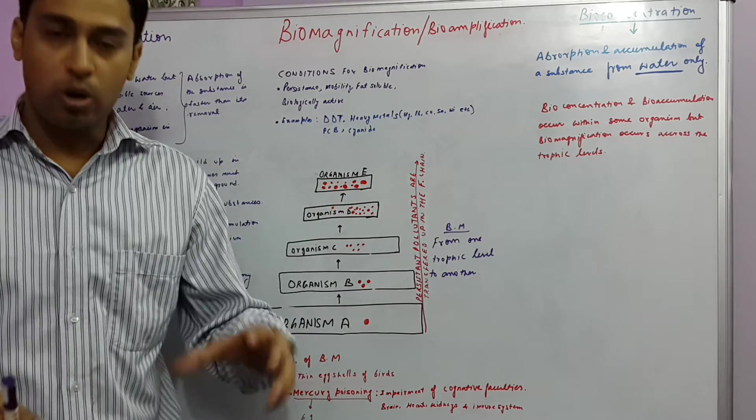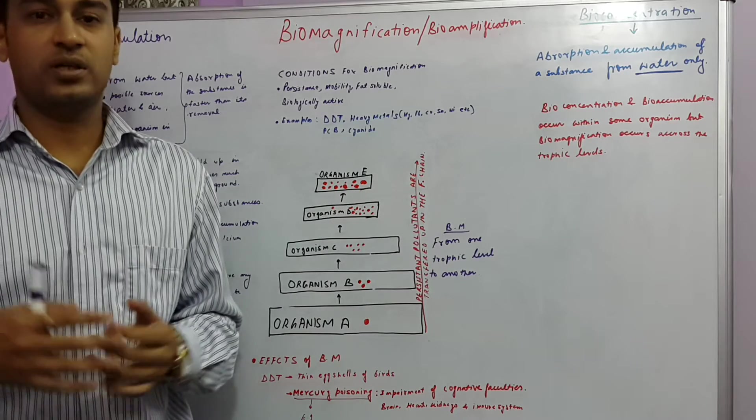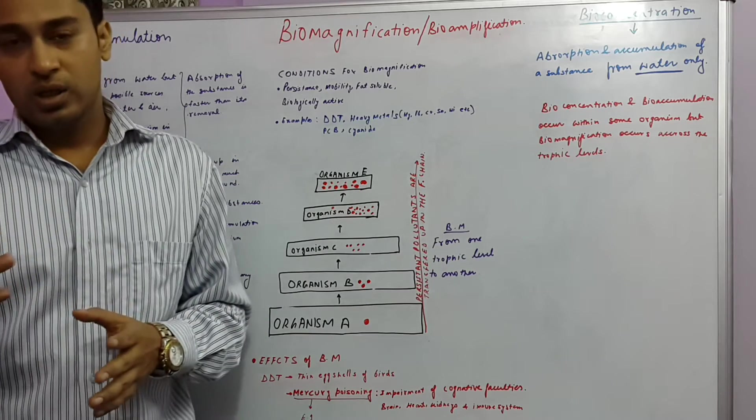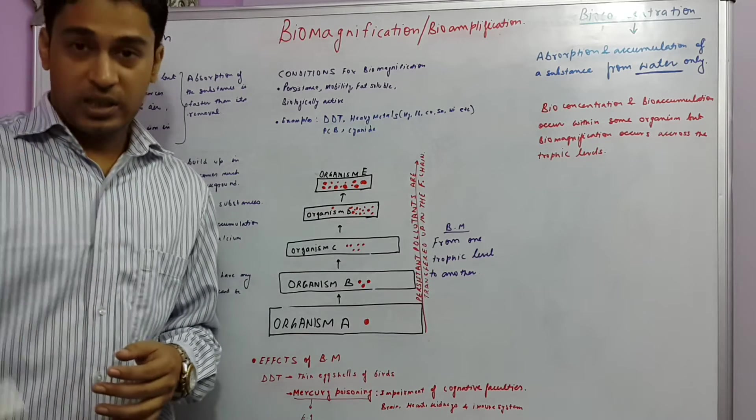For example, mercury poisoning can impair the cognitive faculties. Lead poisoning can also have several harmful effects on either the reproductive system or kidney.